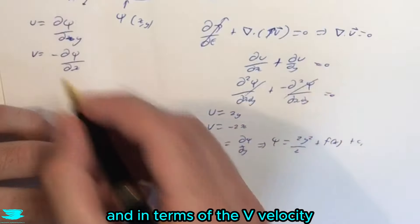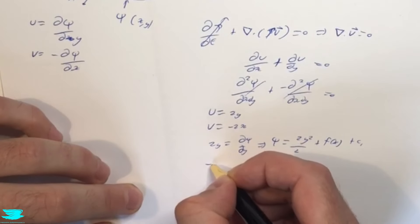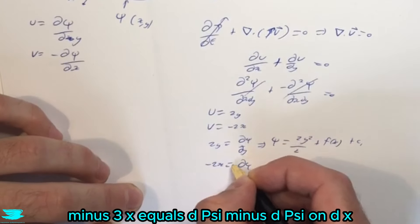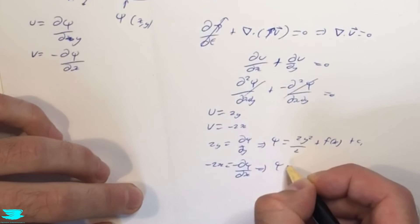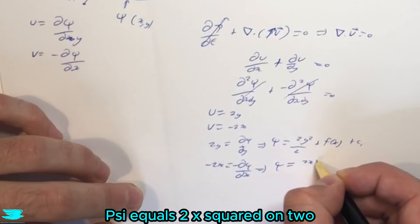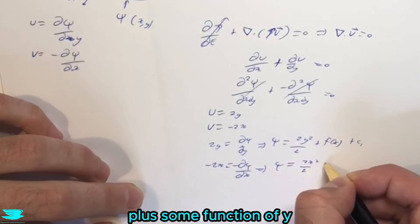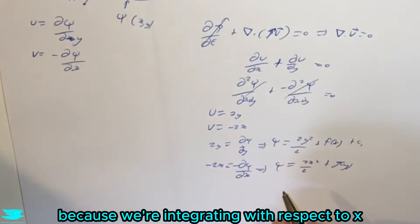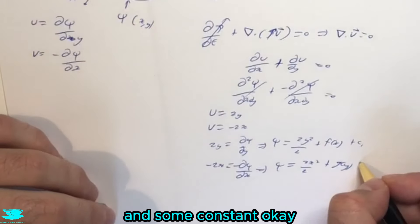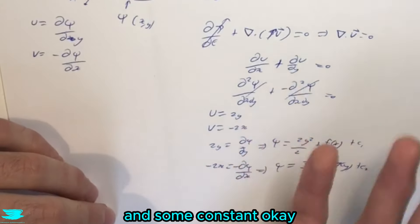And in terms of the v velocity, minus 2x equals minus d psi on dx. As such, psi equals 2x squared over 2 plus some function of y, again because we're only integrating with respect to x, and some constant. Again, it's not that important.